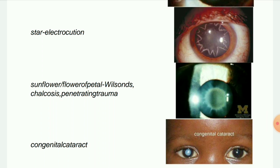Next image: Sunflower cataract — flower of petals pattern. It is seen in Wilson's disease, chalcosis, and in penetrating trauma. Kayser-Fleischer rings and sunflower cataract are related — KF rings are abnormal golden-brown discoloration in the eyes caused by deposits of excess copper. KF rings show up in 97 percent of people with Wilson's disease.